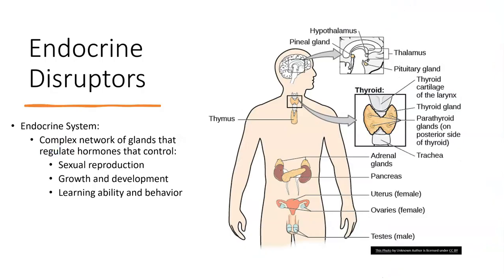Let's talk about some different types of pollutants and toxins that the College Board wants you to be aware of — what they are, what their sources are, what their impacts are. We'll start with what are called endocrine disruptors. Depending on how much anatomy and physiology you've had, you may or may not know what the endocrine system is, so we'll define that briefly. The endocrine system is basically your system of glands — your thyroid gland, your sexual reproductive organs and things like that.